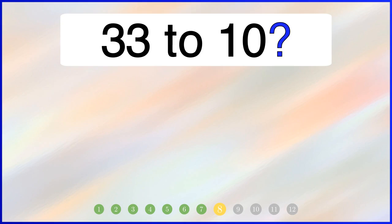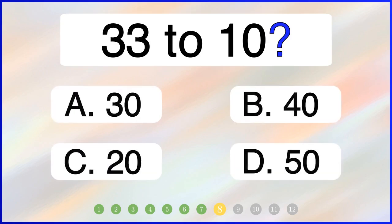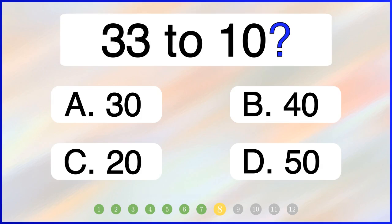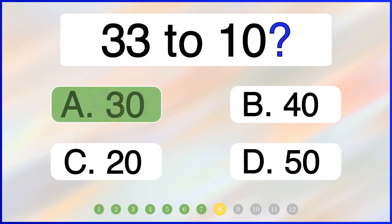What is 33 rounded to the nearest 10? The correct answer is option A: 30.